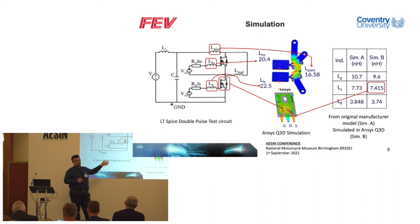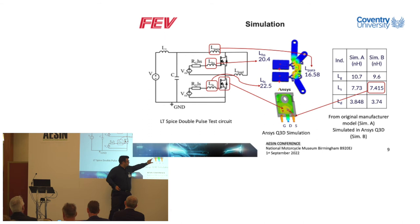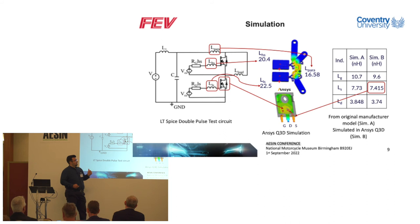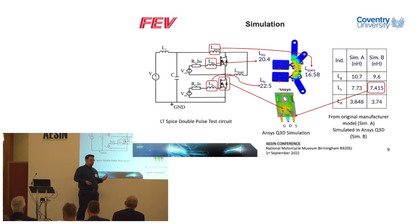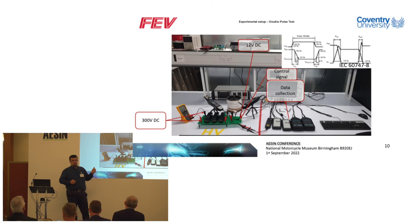Why should I measure again the standard 3-pin packaging? Once the manufacturer gives us the values — simulation A is the original manufacturer model with typical values — the manufacturer only knows what distance we are going to solder our devices on our PCBs, so the inductance will vary. In my case, the LS, known as the common source inductance, has a difference of 0.3 nH. You may say this is so small it doesn't matter, however it matters because the common source inductance influences the switching transients so significantly.